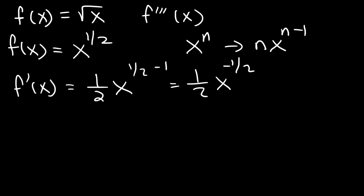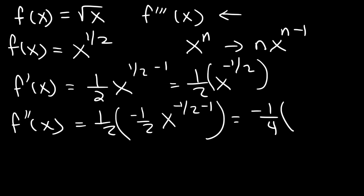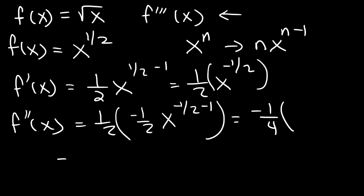I wouldn't recommend rewriting and simplifying yet until you find the third derivative. So let's go ahead and find the second derivative while it's in this form. The derivative of x to the negative 1 half is going to be negative 1 half x to the negative 1 half minus 1. Now, 1 half times negative 1 half is negative 1 fourth. And negative 1 half minus 1 — think of negative 1 half minus 2 over 2 — negative 1 minus 2 is negative 3. So this is going to be x raised to negative 3 over 2.